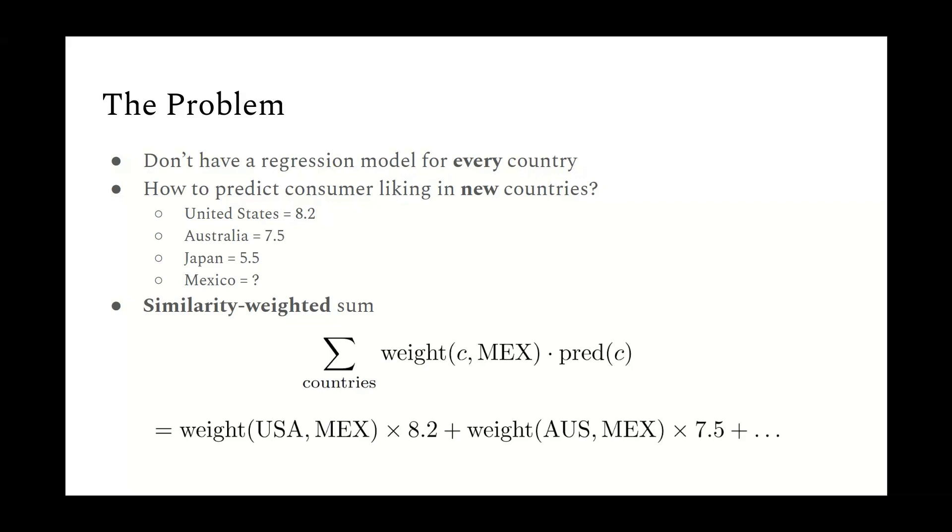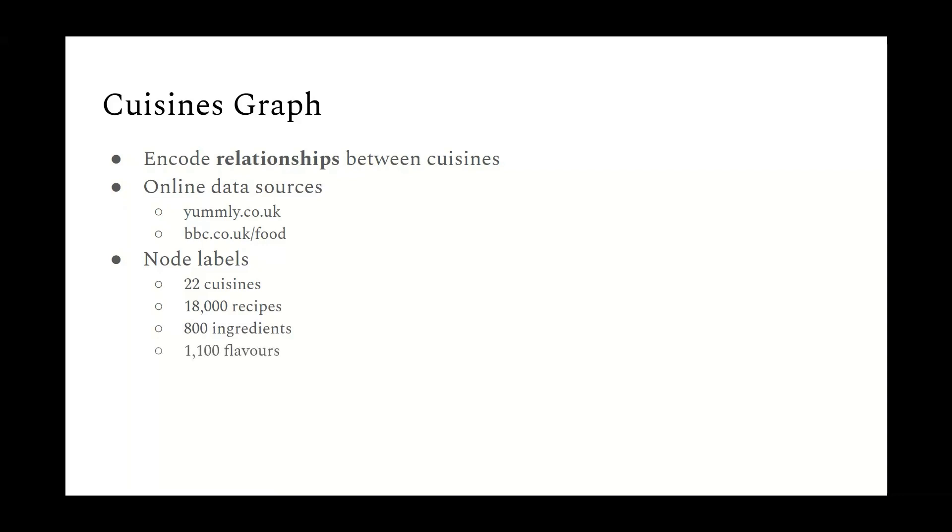Basically, you add up all of the different predicted scores, and you weight each of them by a similarity measure between Mexico and that particular country. For example, the United States predicts 8.2, so you'd weight that by some sort of similarity weight between the USA and Mexico, and then you add on to that one for Australia, and so on. But then this leads on to another problem: how does one determine these weights? How do you quantify how similar two cuisines are? A good solution to this problem is obtained if you use a graph. So what we want to do is that we want to construct a graph that captures the relationships between cuisines.